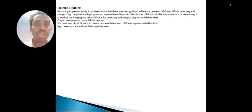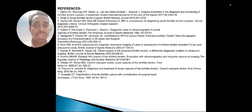In conclusion, according to the present study, USG and MRI are both effective in detecting and categorizing complete and high-grade tears of tendo-Achilles. However, as USG is effective and less time consuming, it should be the imaging modality of choice for detecting and categorizing tendo-Achilles tears. These are the various references we have used for our studies.